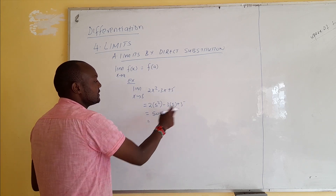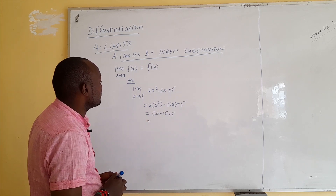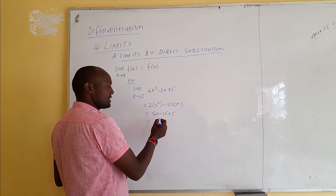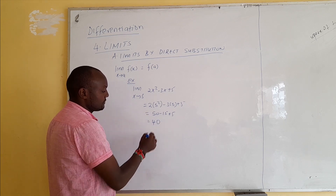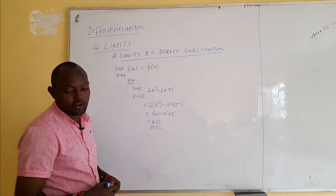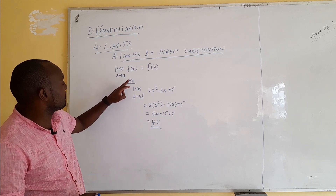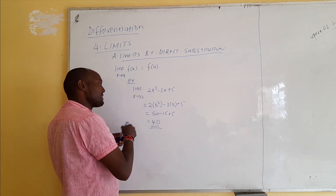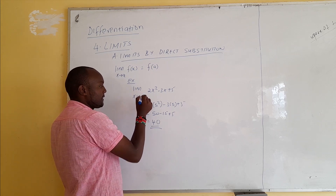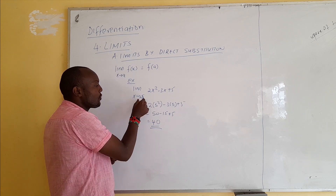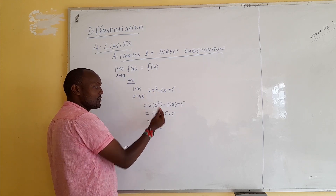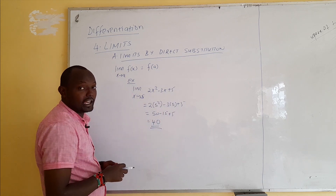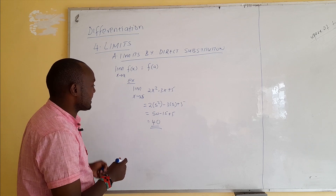We get 2(25) - 15 + 5, which gives 50 - 15 + 5 = 40. This is what we call direct substitution — we replace x with 5 everywhere, giving 5² = 25 times 2 minus 15 plus 5, and we get 40.